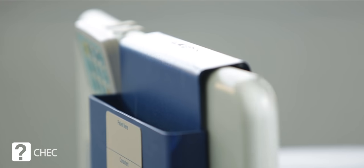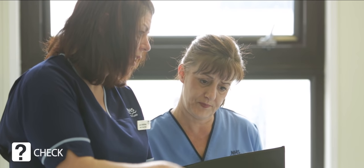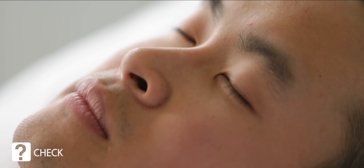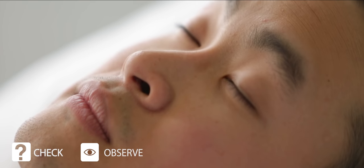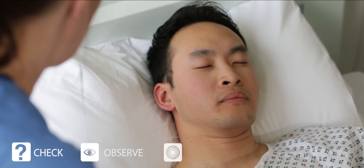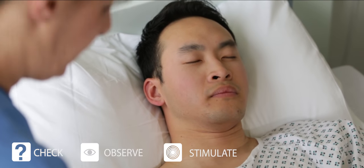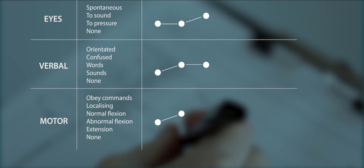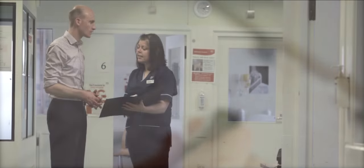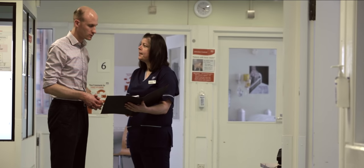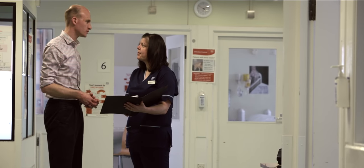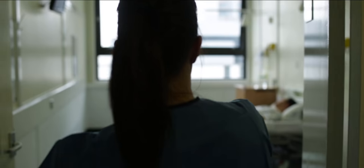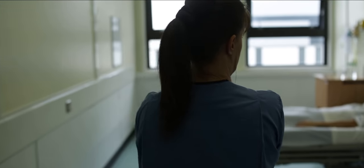To recap: check for factors that might interfere with your assessment. Observe the patient for spontaneous eye opening, speech and movement. If necessary, then stimulate the patient, first verbally and then physically. Findings should be documented clearly on a coma scale chart. The observations can then be clearly communicated and the trend rapidly appreciated, so that any improvement or deterioration in a patient's condition can be seen.